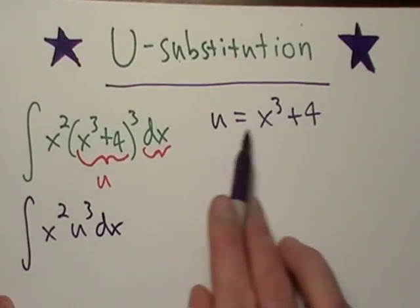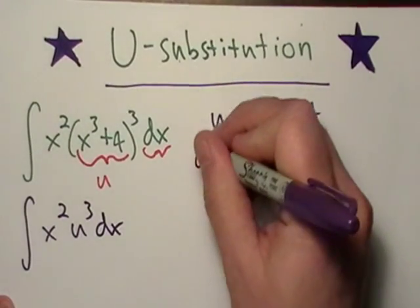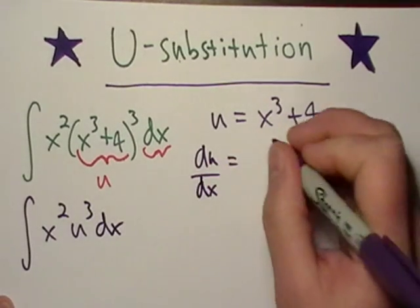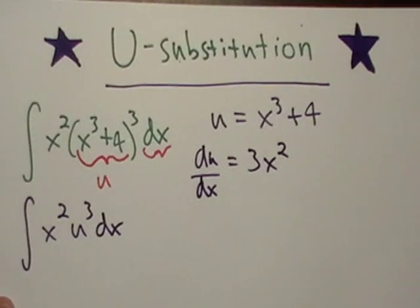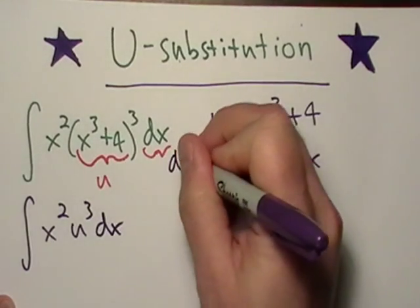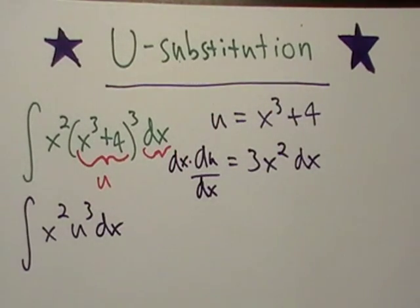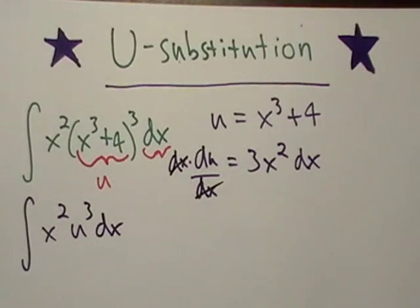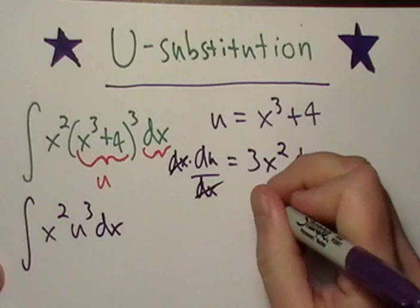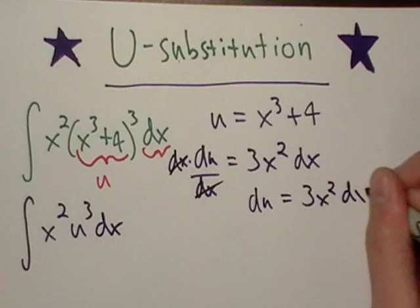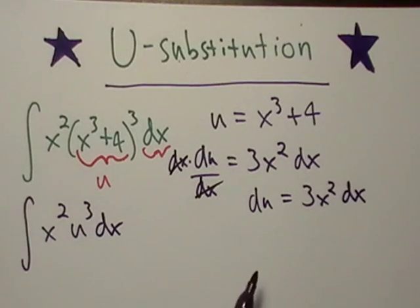So what we'll do is we'll take the derivative of u. Okay, let's just do it. Take the derivative of u. We can do that. That's 3x squared, okay? Now the next thing I'm going to do is I'm going to multiply both sides by dx, okay? It's going to cancel those bad boys out. So now what do I got? I got du is equal to 3x squared dx.